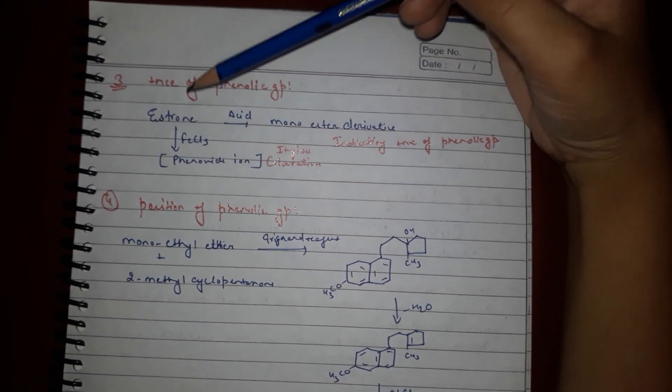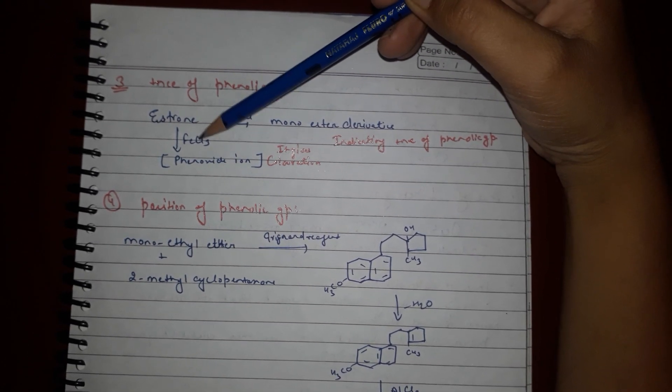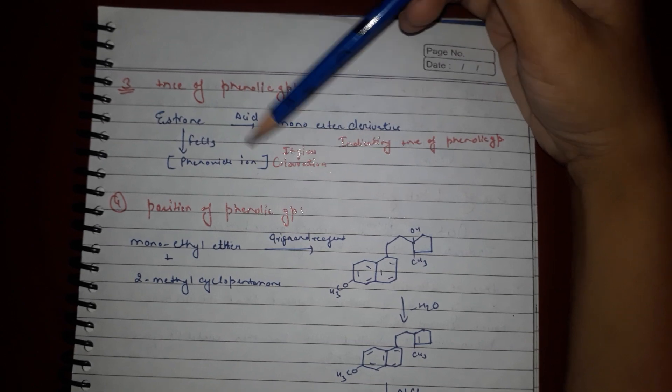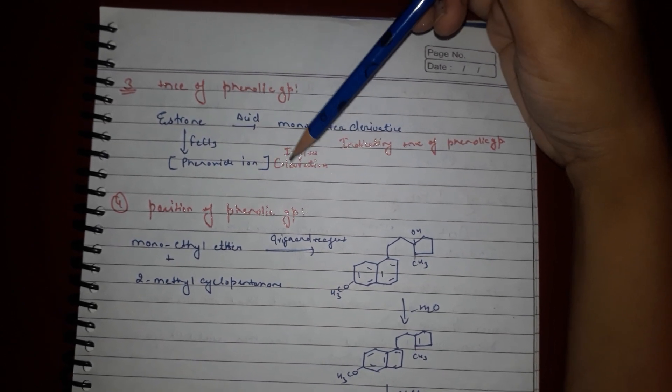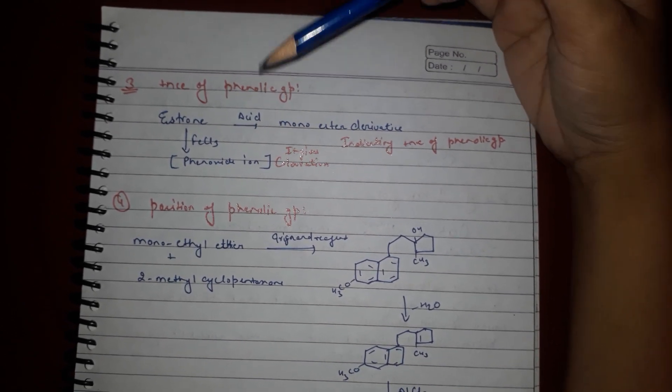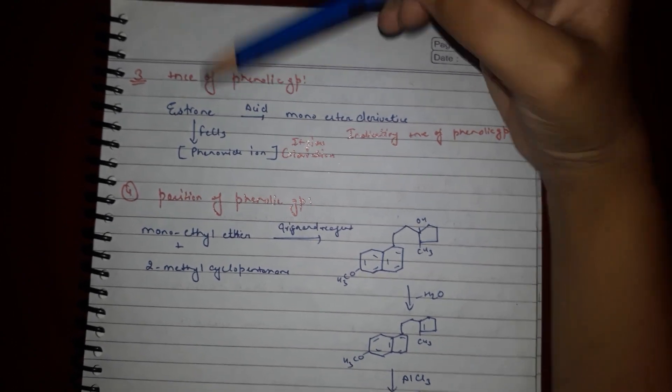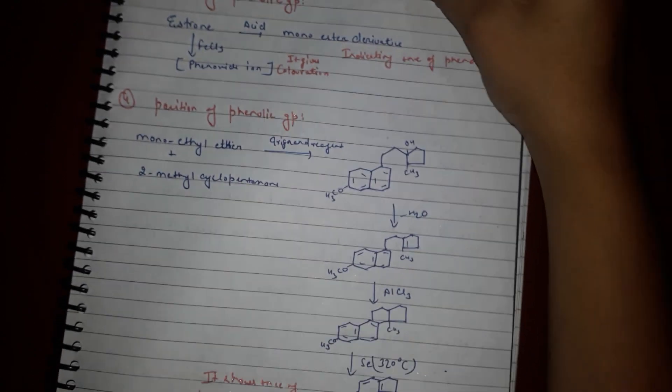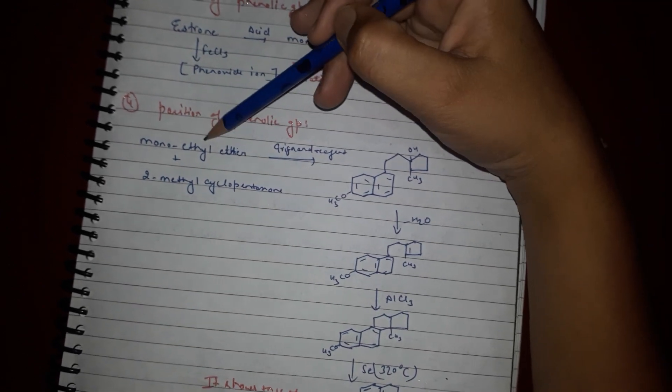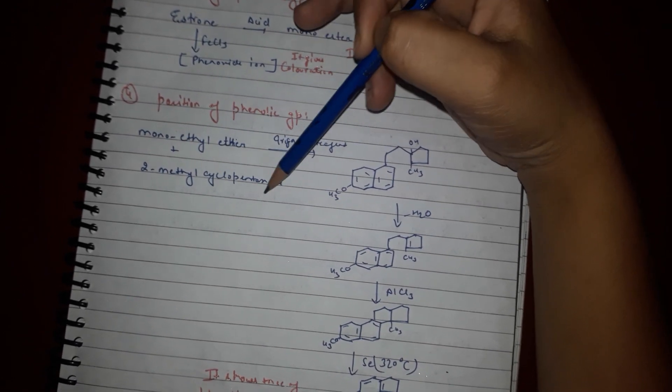Now we have to study whether the OH is phenolic or not. Estrone on FeCl3 gives phenoxide ion and color, which shows that there is a presence of phenolic group in the structure of estrone.